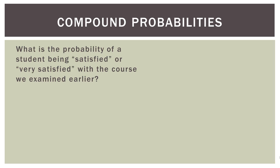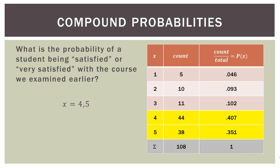Another example: what's the probability of a student being satisfied or very satisfied with the course? Those two were coded as four and five. From our chart, the probability of being satisfied was 0.407 and very satisfied was 0.351. Adding those together, the probability of being satisfied or very satisfied is 0.758, or 75.8% — which is pretty good. You could also be asked for the probability that a student is dissatisfied or very dissatisfied, in which case you would add together the one and the two.